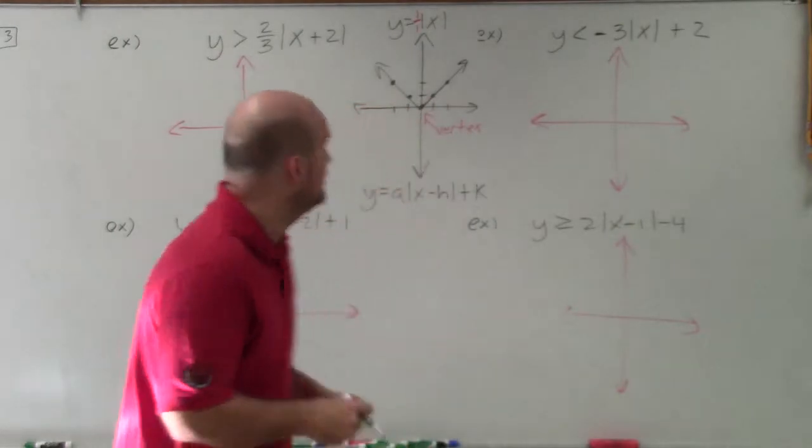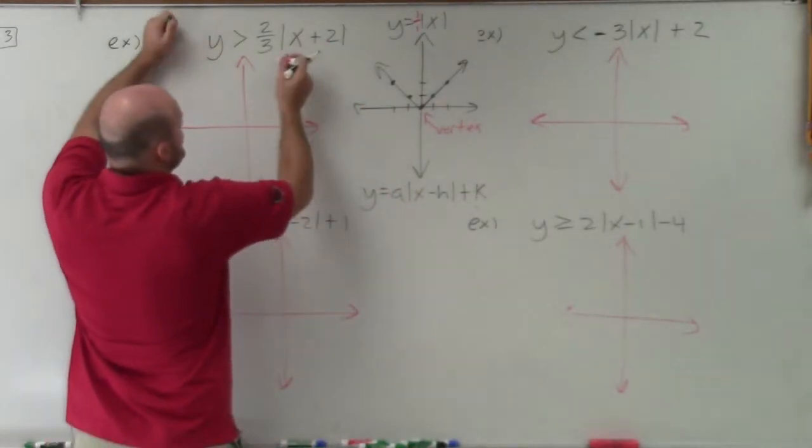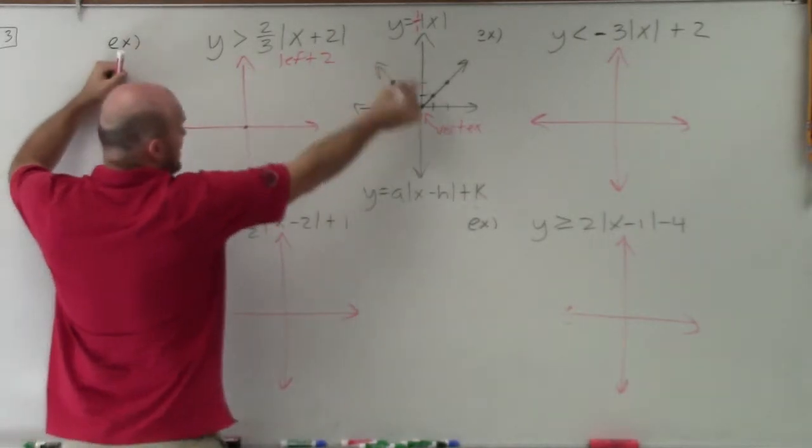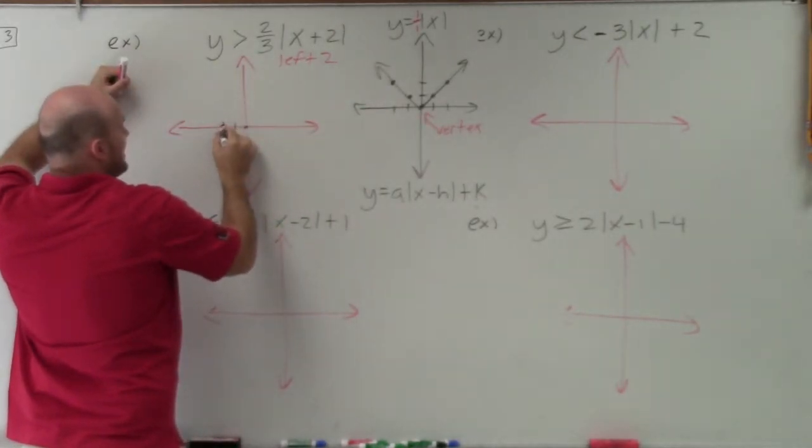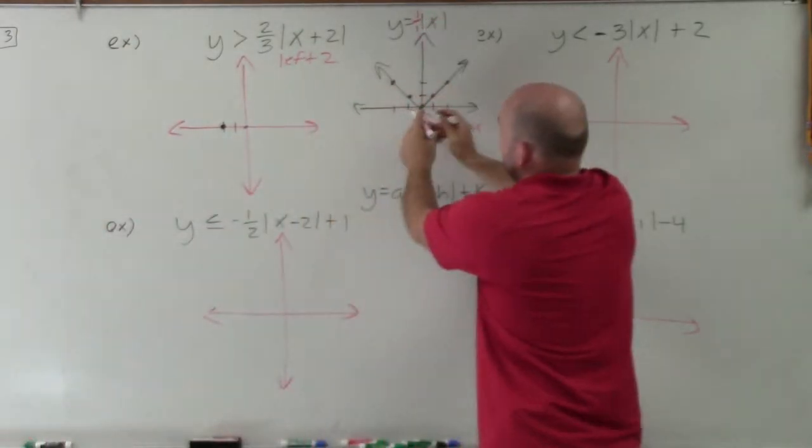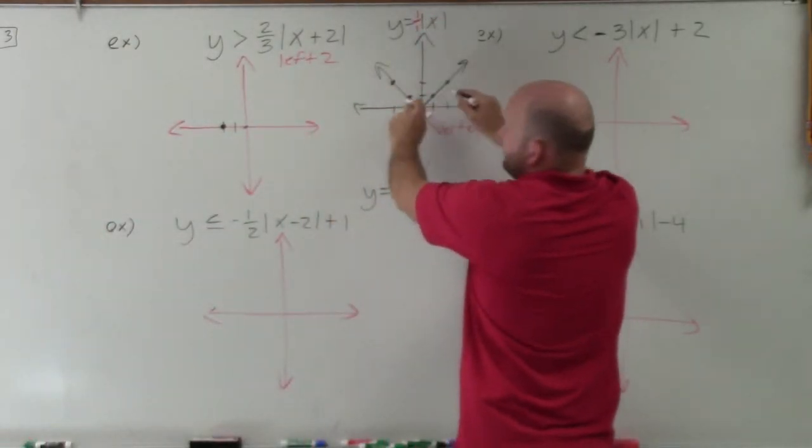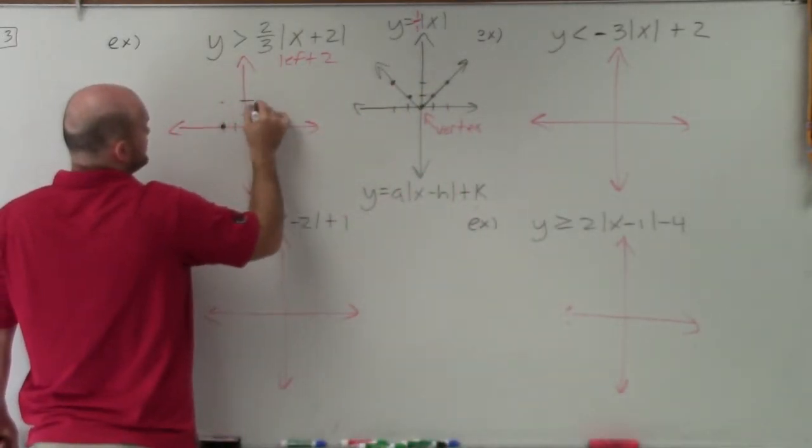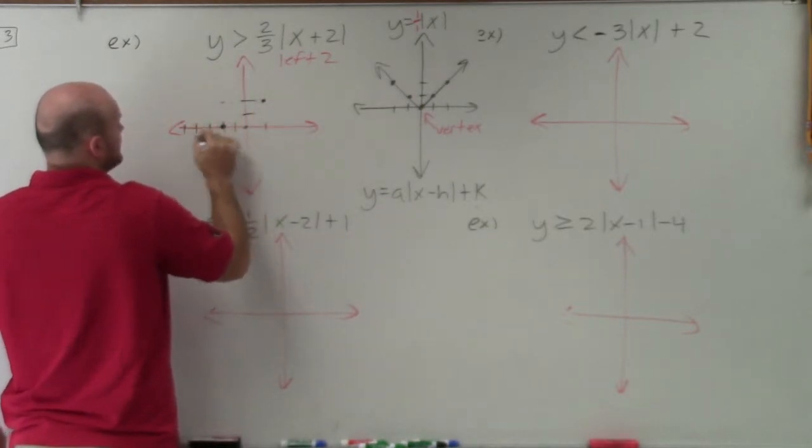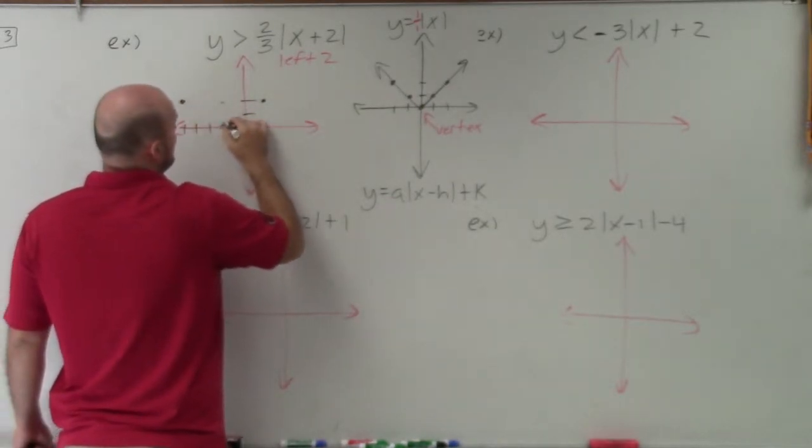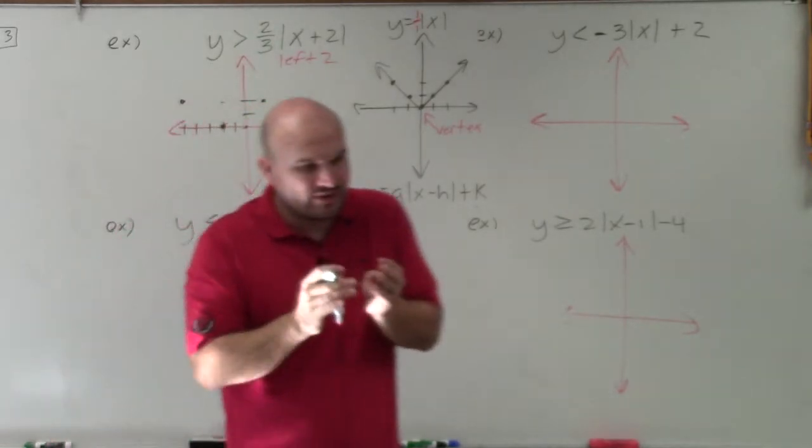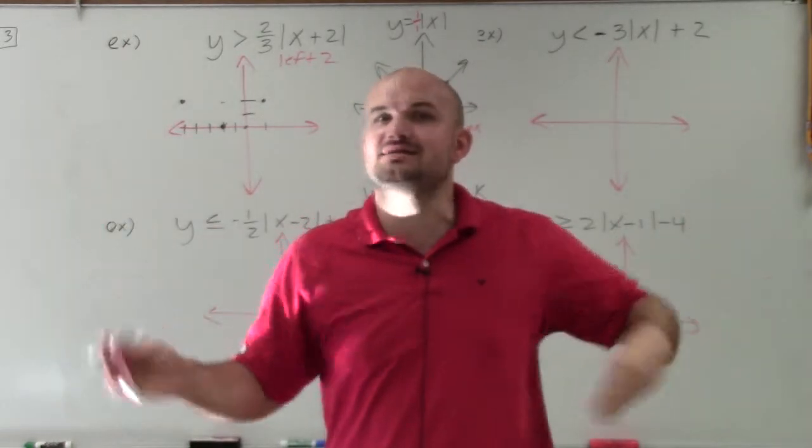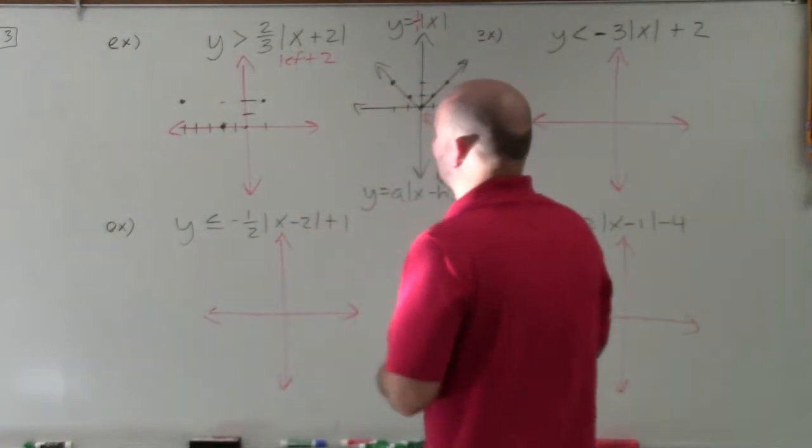My transformations is x plus 2, that's going to tell me to go to the left 2. So my parent graph has a vertex of 0, 0. Now my vertex is going to be at negative 2. Rather than having my parent graph go up 1, over 1, I'm now going to go up 2 to the right 3. 1, 2, 3, and to the left 3. When a is less than 1, the absolute value of it is less than 1, that's stretching the graph horizontally or compressing it vertically.